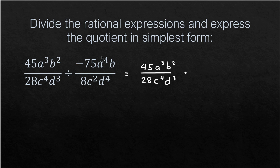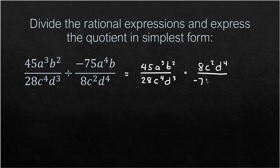We get the reciprocal of the second rational expression. The numerator becomes 8C²D⁴ and the denominator becomes negative 75A⁴. Now this is a multiplication problem and we can begin canceling common factors from the numerator and denominator.